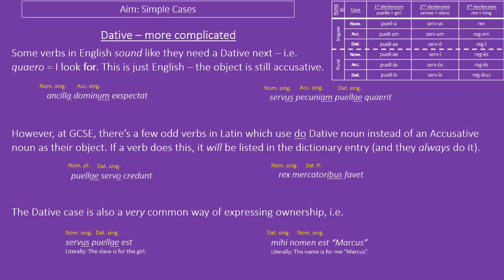The dative also has a couple of complications. The first is actually a problem of English — there are some verbs in English that sound like their object will be dative. For example, 'I look for something' — you might think the next word has to be dative, but it's not in Latin, that's just an English thing. The slave girl is expecting the dominum — if you translate expectat as 'is waiting for,' it sounds like the next word is dative, but it's not. The more complicated example: the servus is looking for pecuniam for the puellae — puellae is dative singular, so 'looking for money for the girl.' The first 'for' is just a quirk of English; the second 'for' is the actual dative case.